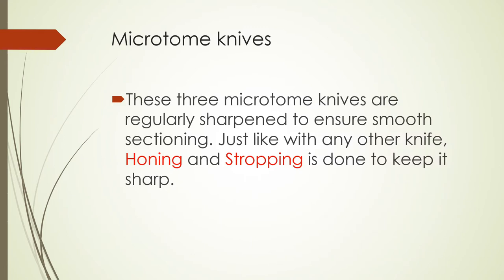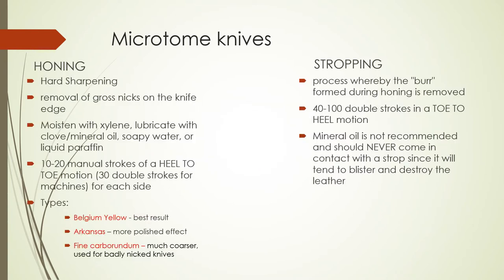These microtome knives are regularly sharpened to ensure smooth sectioning. Honing and stropping is done to keep them sharp. Honing is hard sharpening — removing the gross nicks on the knife edge. When you hone, first moisten your honing material with silene and lubricate it with clove or mineral oil, soapy water, or liquid paraffin. We do 10 to 20 mantle strokes in a heel-to-toe motion — heel being the base nearest the handle, toe being the top point of the knife — and 30 double strokes for machines on each side. We have three types of honing materials: Belgium yellow, which gives the best result; Arkansas, which gives a more polished effect; and fine carborundum, a much coarser material used for very badly nicked knives.